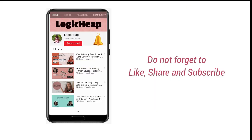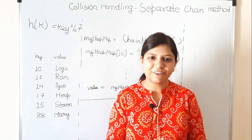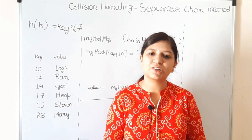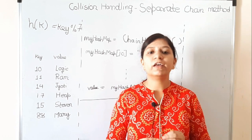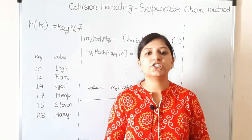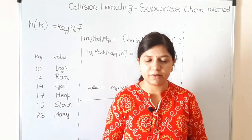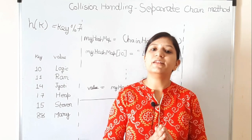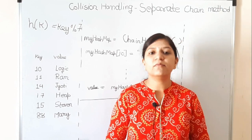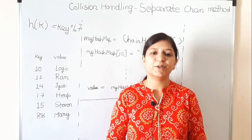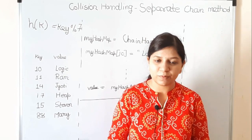Don't miss out on our new videos by subscribing to Logic Heap and pressing the bell icon. Hello friends, welcome to Logic Heap. In the last tutorial we saw how we can handle collisions in hashing using the separate chaining method. Today we'll see its implementation in Python, and after this tutorial you should be able to write the code yourself.